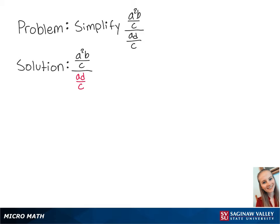When we divide two fractions, we multiply the numerator by the reciprocal of the denominator. So this is going to equal a squared b over c times c over ad.